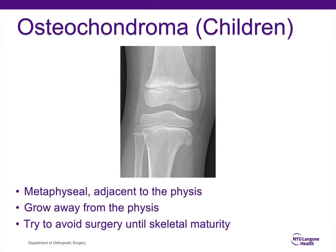Osteochondroma in children tends to be an active lesion. These are metaphyseal, right adjacent to the physis, and they grow away from the physis. We tend to avoid surgery until skeletal maturity due to the increased risk of recurrence and risk of damage to the perichondrial ring.